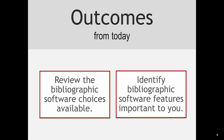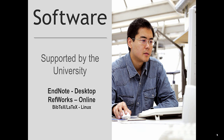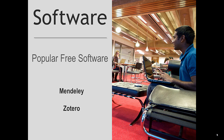At the University of Leicester, we provide access to two main software packages. EndNote is primarily a desktop piece of software that can be used on any university-owned machine, though you can also sync it with an online EndNote account. RefWorks is an online piece of software that can be accessed wherever you have internet access. There are also lots of free bibliographic software packages, such as Mendeley and Zotero, which offer desktop and online versions. However, you would not be able to use the desktop versions of these on the university computers.